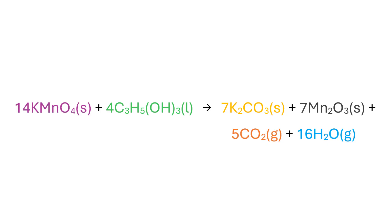The reaction between glycerol and potassium permanganate follows the equation shown here. The glycerol is violently oxidized by permanganate to form potassium carbonate, manganese trioxide, carbon dioxide, and water.